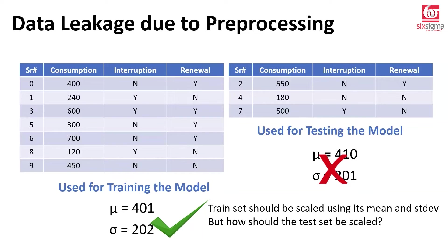It's like writing an exam and being told exactly what questions will appear — that defeats the purpose. Your test data should never participate in any calculation. Any hint from the test set must not influence the training data. The key takeaway: use the mean and standard deviation computed from training data to scale the training data, and use that same mean and standard deviation to scale the test data as well.